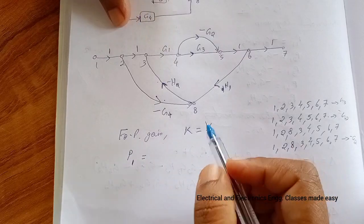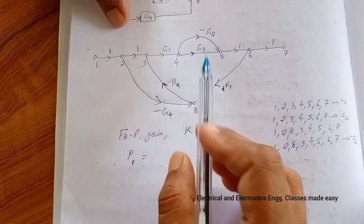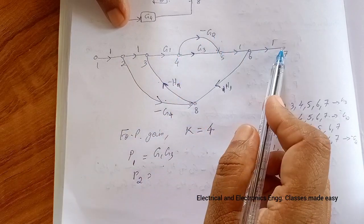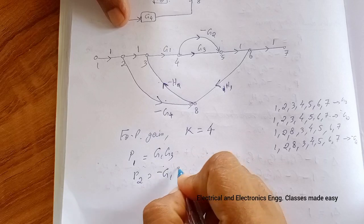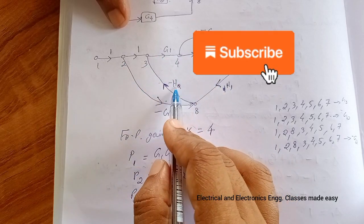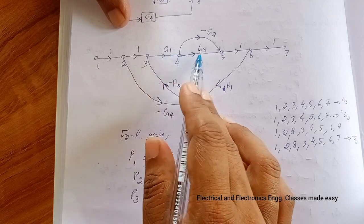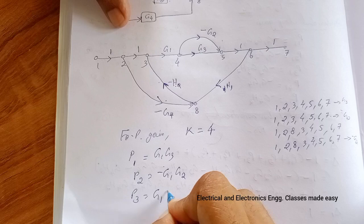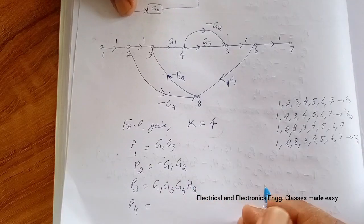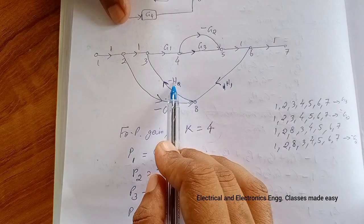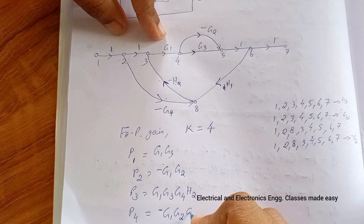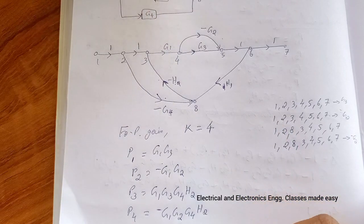Now we find the four forward path gains. P1 is G1·G3. P2 is minus G1·G2. P3 is minus G4 times minus H2 times G1·G3, giving G1·G3·G4·H2. P4, the fourth forward path gain, is minus G4 times minus H2 times G1 times minus G2, giving minus G1·G2·G4·H2.